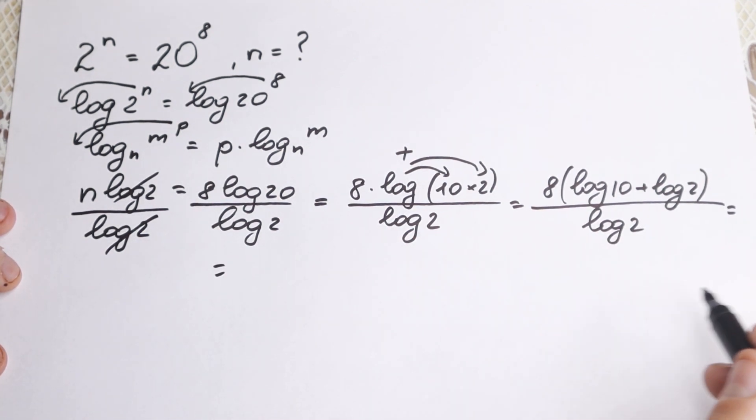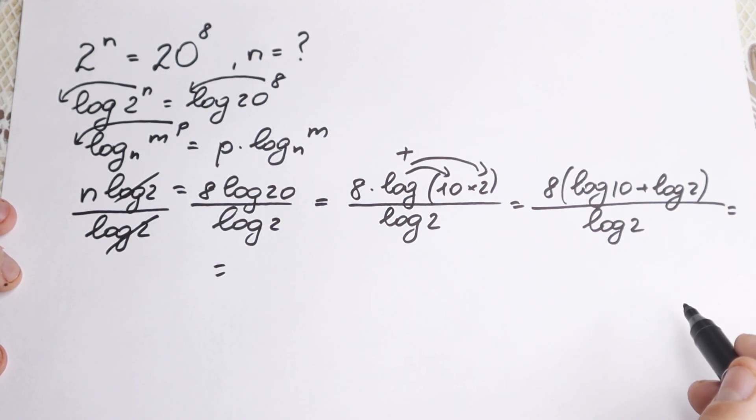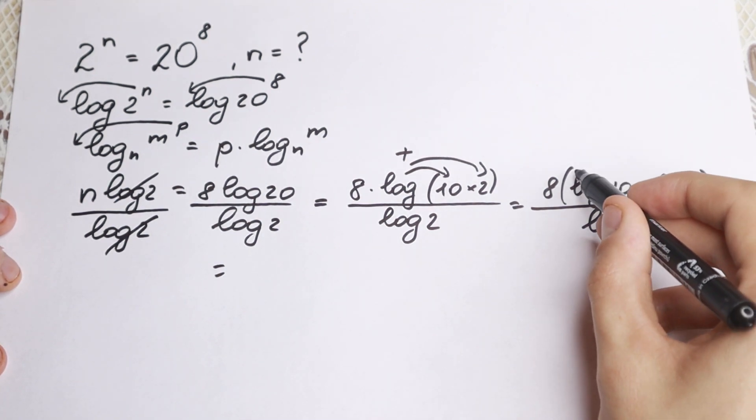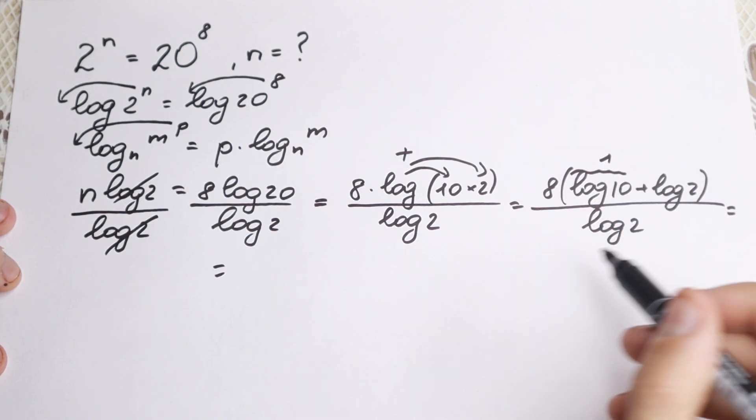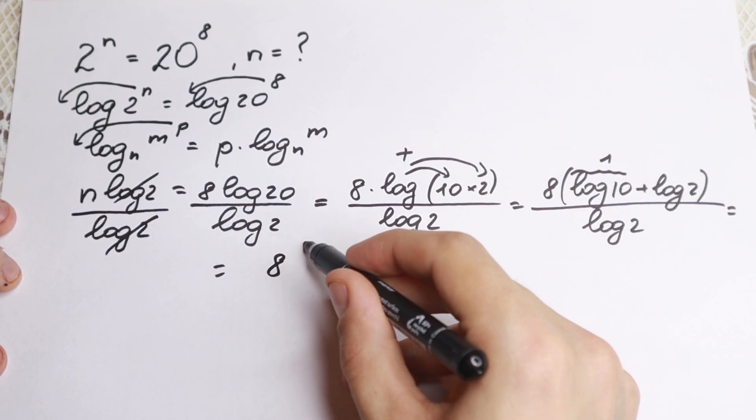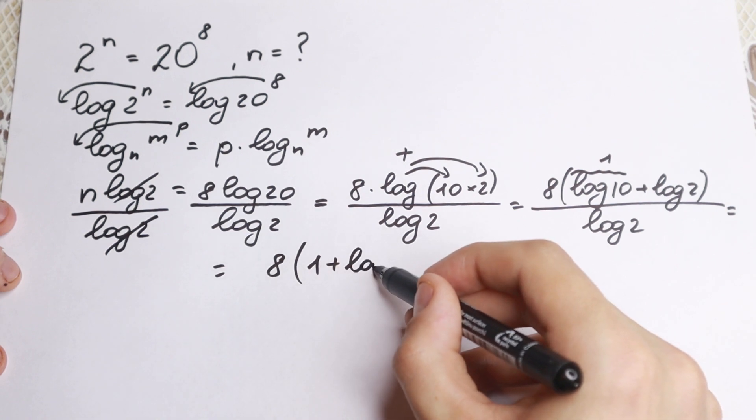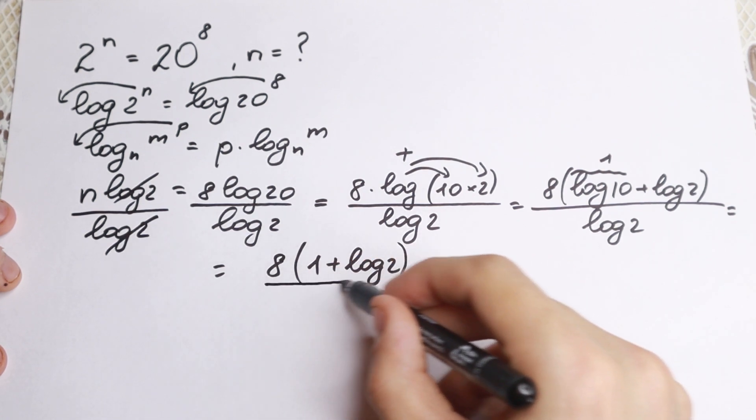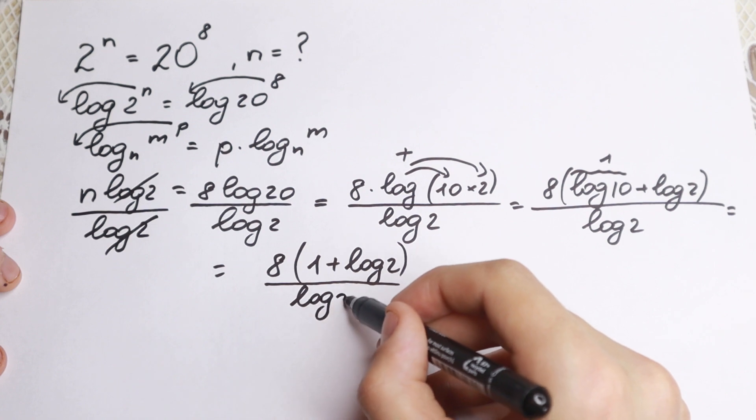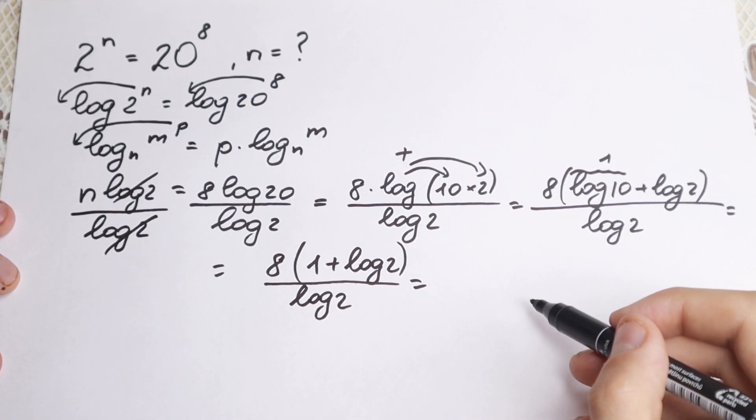So I hope you understand this step, logarithm property. Okay, let's go next. What are we going to do next? First of all this one equals 1 because we have same base, same exponent, so we have 8 in parentheses 1 plus logarithm 2 and dividing by logarithm 2.